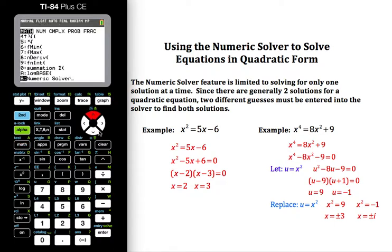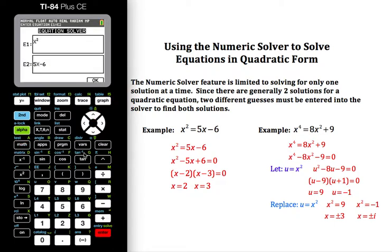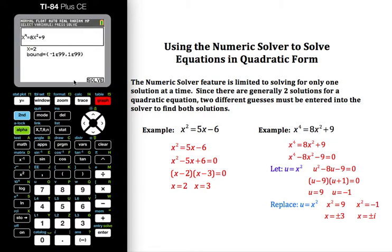If I hit math and then arrow up, I'm getting back to that numeric solver. Now let's clear that out and put in our x raised to the 4th, and clearing out the second part of that, 8x squared and then plus 9. And hitting OK. Now we're back to the guess.